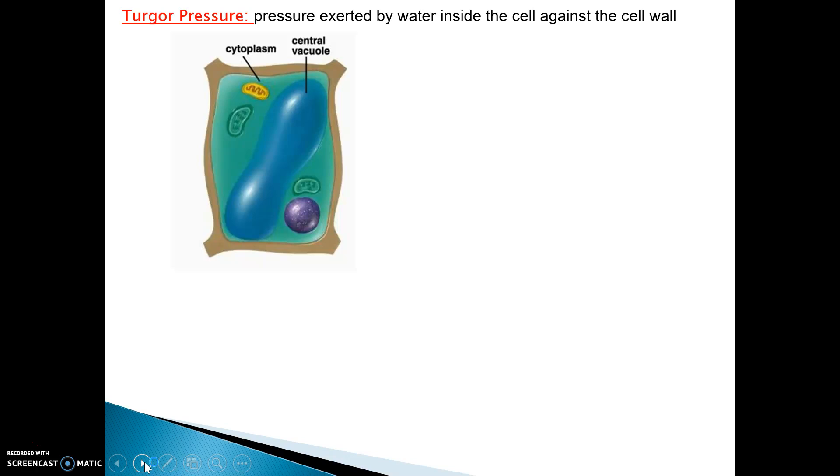In this case, the force or turgor pressure is strong and keeps the entire cell firm. When this happens in every cell of the organism, all of the plant tissue is crisp and the plant stands upright.